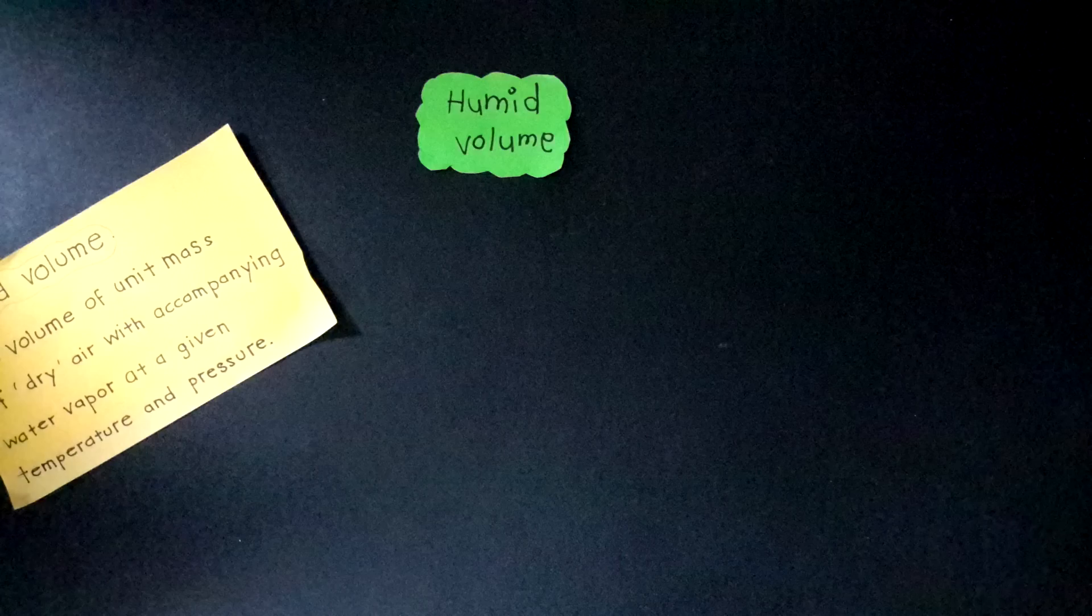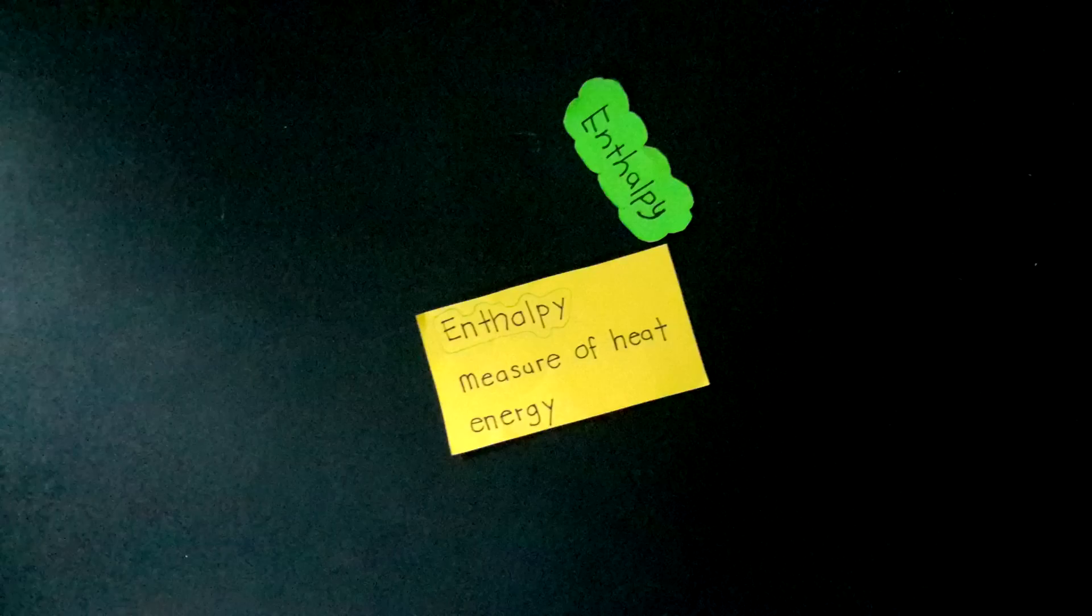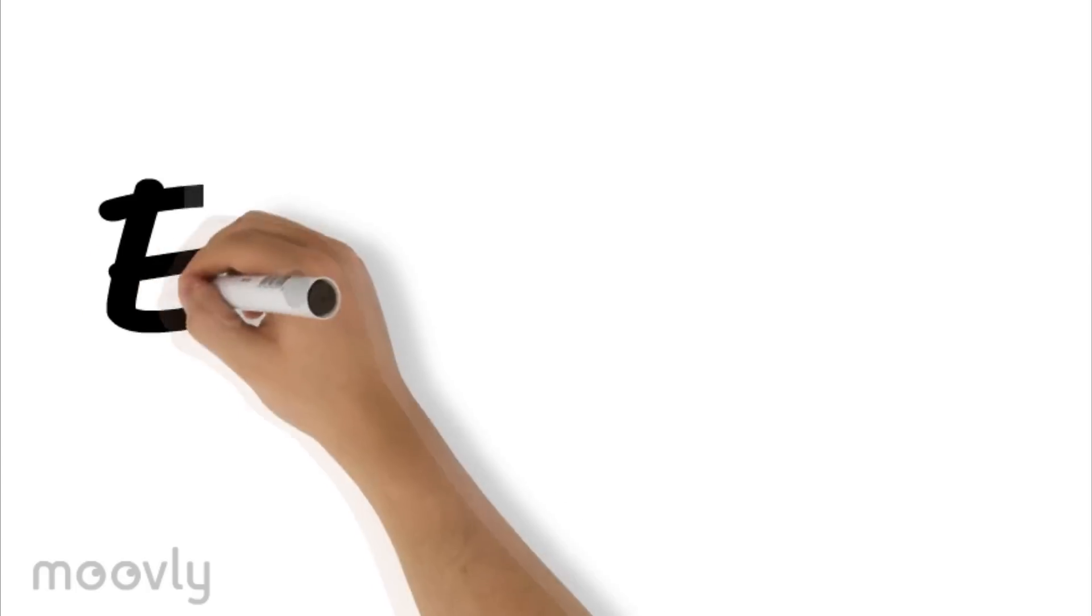Humid volume: the volume per unit mass of dry air. Enthalpy: the total amount of heat energy of the moist air.